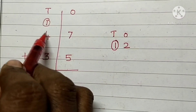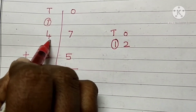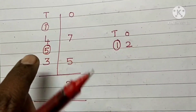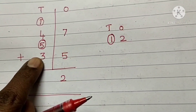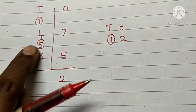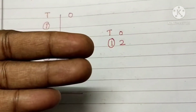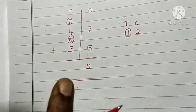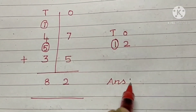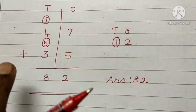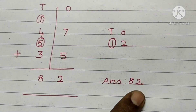Do you know children? 4 plus 1. Yes. 4 plus 1 is 5. Write 5 here. Add the third number to the sum of the first two numbers. 5 in the mind, 3 in the fingers. After 5: 6, 7, 8. The answer is 82. The sum of 47 plus 35 is 82.